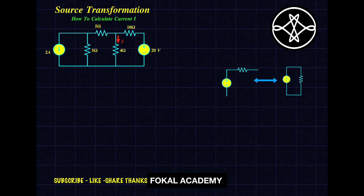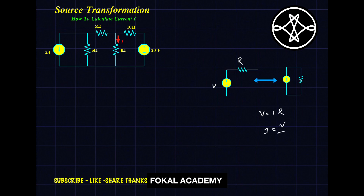Whenever a voltage source is connected with a resistor in series, how can you convert it into a current source? Suppose this is a voltage V connected with resistor R in series. Then the current, according to Ohm's law, is I = V/R. The resistance remains the same — it just moves to parallel. This is the process of converting voltage to current.